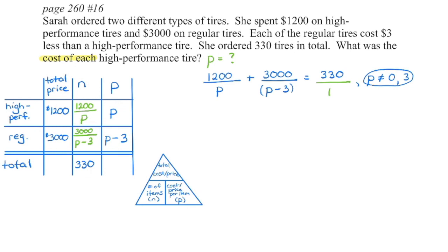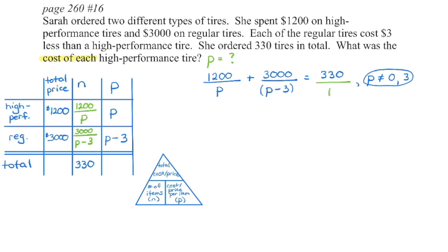The high performance tires plus the regular tires equals the total number of tires. I begin by bracketing my binomials — this is the only one and it's not factorable. I state my non-permissible values, find the lowest common denominator, and solve the equation for P.